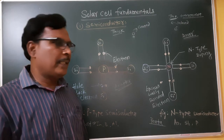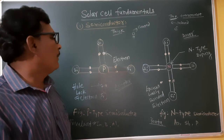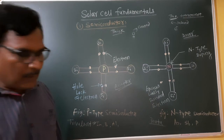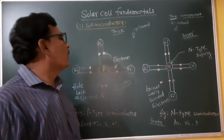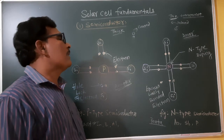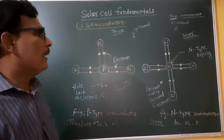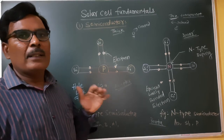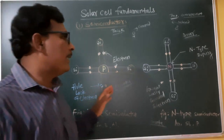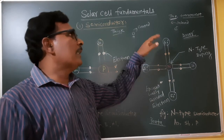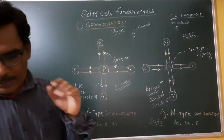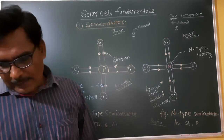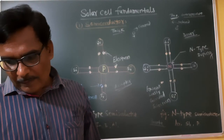A solar cell is a light-sensitive two-terminal semiconductor NP junction. It is made up of P-type and N-type semiconductor material. In the PV cell, there are two junctions: P and N. N is negative and thin, P is positive and thick.